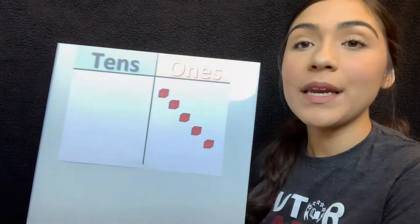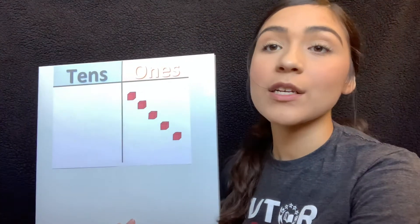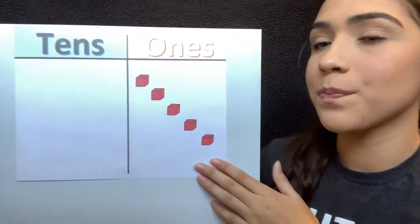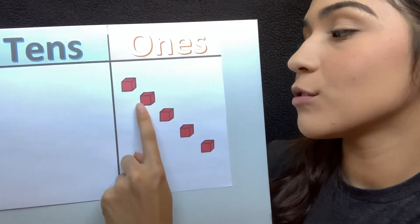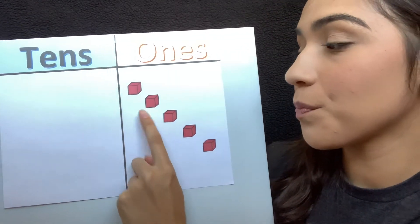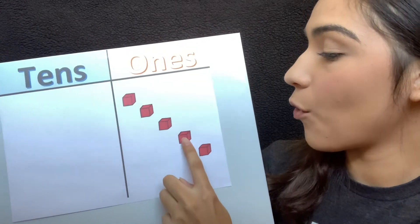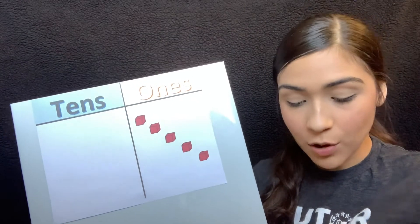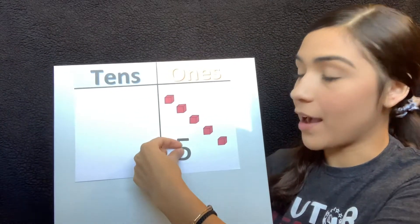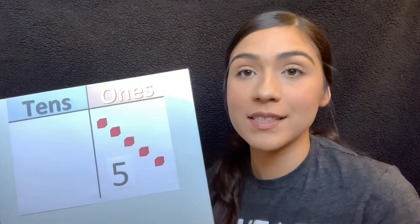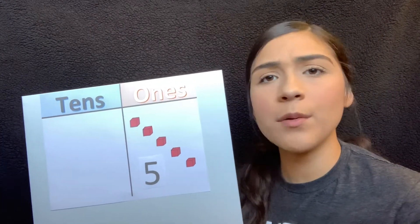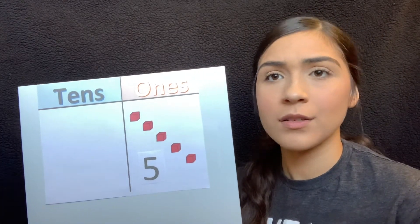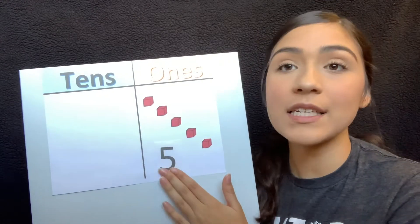How many ones do I have here? Let's count. One, two, three, four, five. So I have five ones. Is there any rule being broken? No, right? We have one digit.